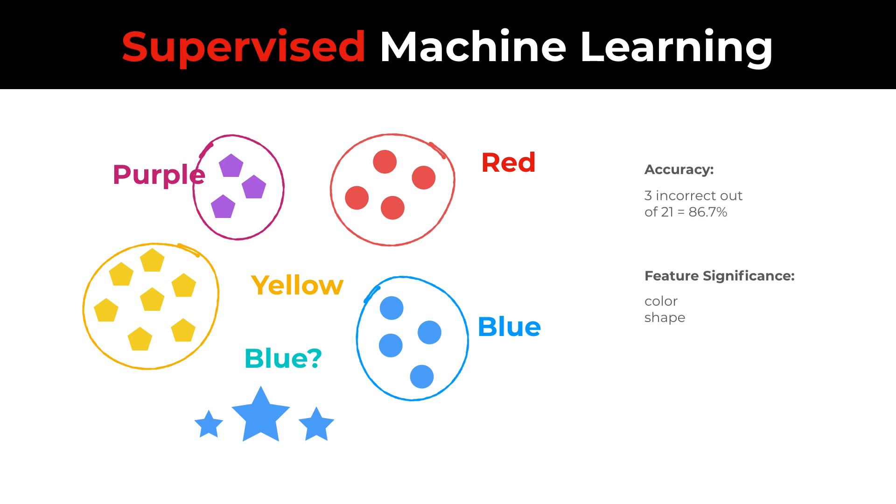It does so by evaluating which features, if taken out, are the most significant for accuracy of the prediction.